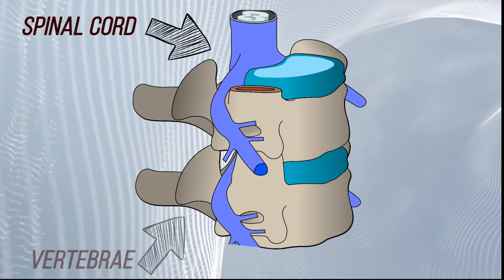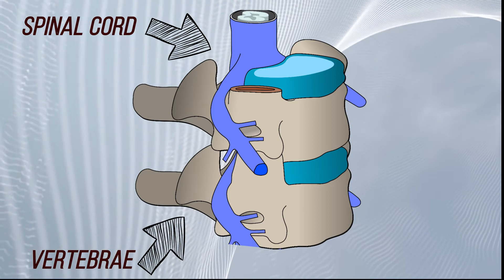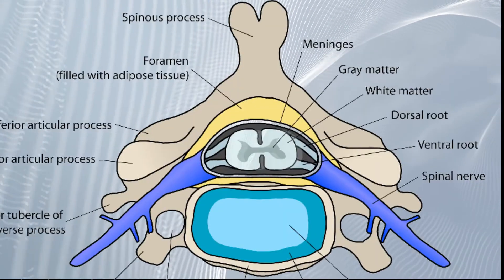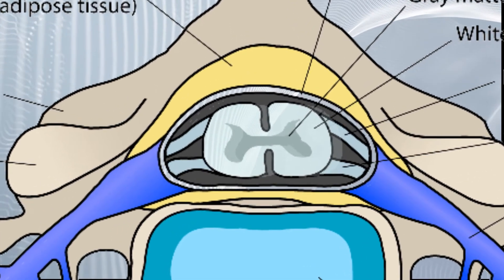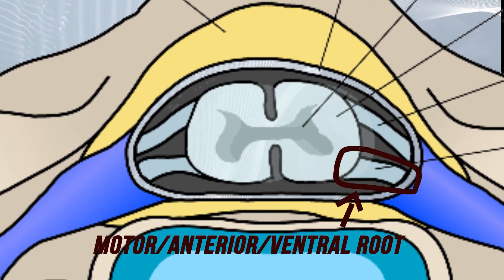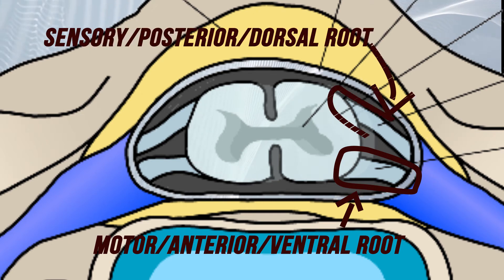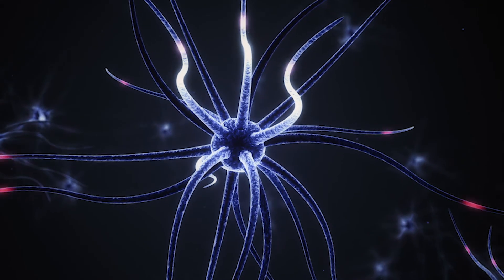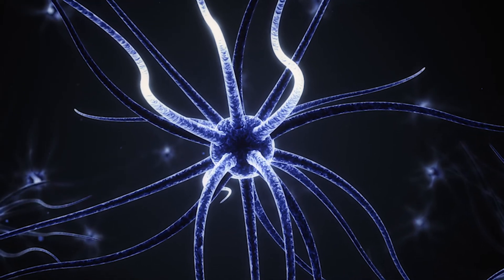Spinal nerves emerge from the spinal cord between the vertebrae, and there are 31 pairs of spinal nerves. Each nerve emerges in two short branches — one at the front, which is the motor or anterior root, and one at the back, which is the sensory or posterior root of the spinal cord. The motor roots carry commands from the brain to move parts of the body, and the sensory roots carry information of touch to the brain. How damaged the spinal cord is affects whether these messages can get through or not — some motor commands may get through, or you may have a slight altered sensation.